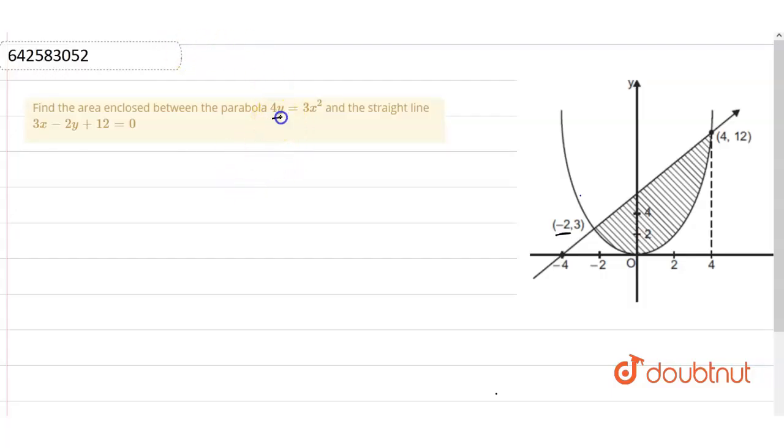This is 4y equals 3x squared, and this is 3x minus 2y plus 12. So this is the graphical representation of this equation. Just write this 4y equals 3x squared in terms of y, which is going to be 3x squared divided by 4.